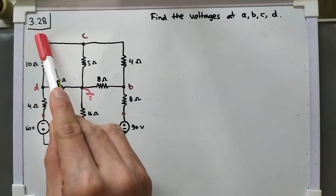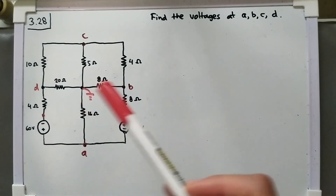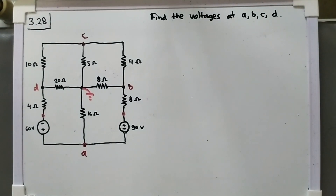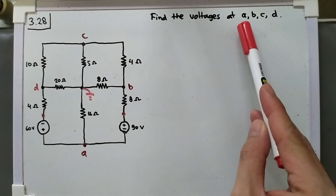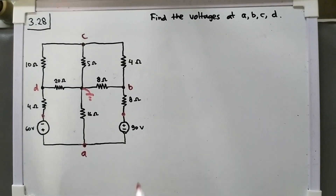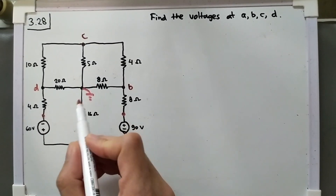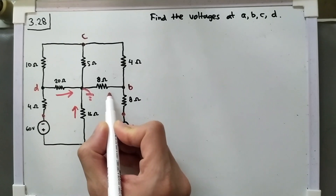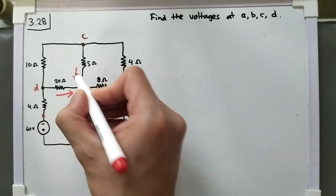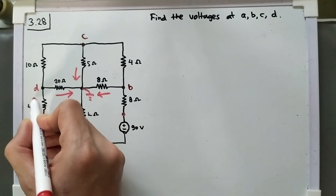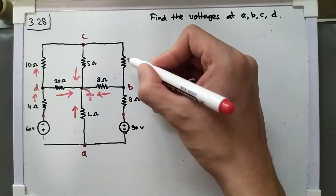We are going to solve problem 3.28 from Sadiku's book. This problem is rather unique because the ground is in the center, but it's not a problem. Our task is to find the voltage at A, B, C, and D. First, I will assume the direction of the current. For my convenience, I always assume that the direction is to the ground, so all the inside resistors will have current going to the ground, and for the others I will make them go up.